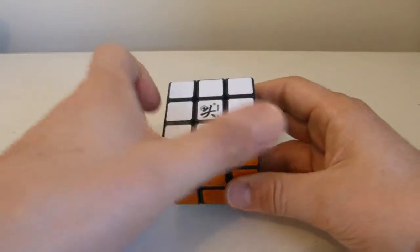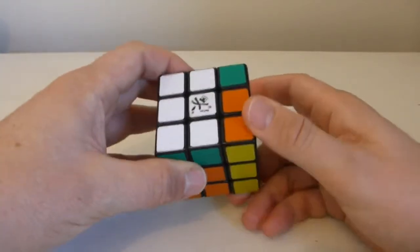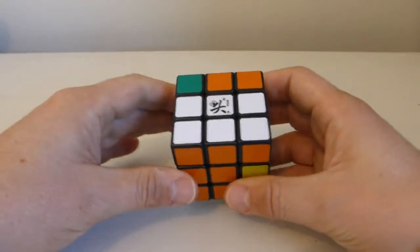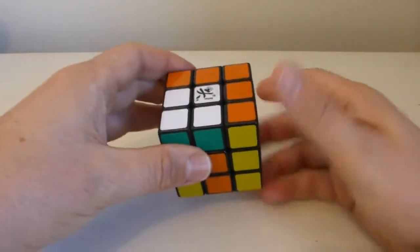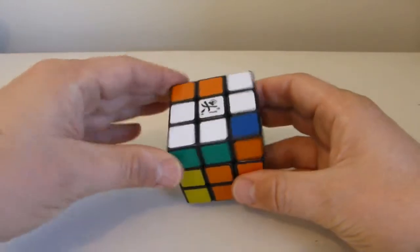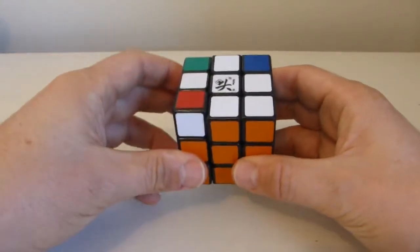So the moves are an up turn, then a right turn, then an up prime, then a left prime, then an up, right prime, up prime, left.